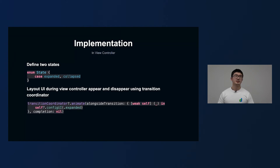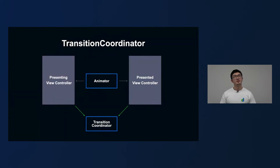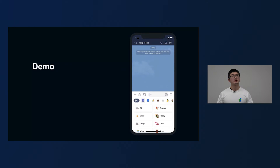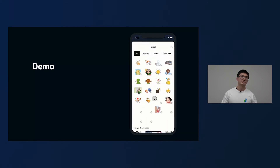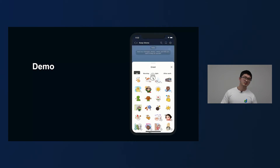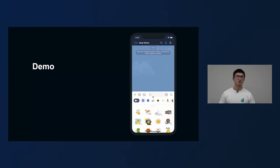Then in the viewControllerWillAppear and disappear methods, we use the transition coordinator to make our transition animatable. If you are not familiar with transition coordinator, it is the object that UIKit automatically creates for us during the view controller transition process. You can use the transition coordinator to bind custom animations with the transition animation, and your custom animation will sync with the transition animation. That means if the transition is an interactive one, your extra animation will also become interactive for free. Let's have a look at what our keyboard looks like after we define the two states of the category detail view. We pull up the handle, the expanded view is rolled up, and we drag down the view — there is an interactive dismiss. It looks pretty nice, and we have a good interactive dismiss animation without writing a single line of code for it.